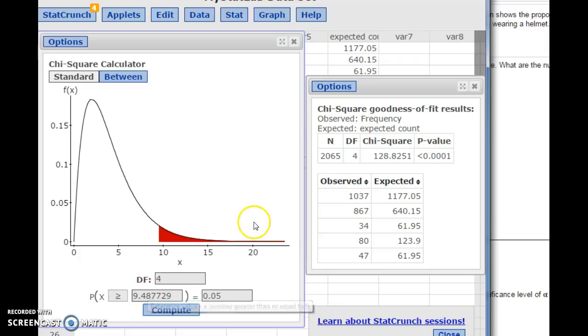If we were using the classical approach, you compare your test statistic. If it's bigger than this critical value, it means it's farther out in the tail and we're going to reject the null hypothesis. If this was smaller than our critical value, it means we're over here in the heart of the distribution and we're not going to reject the null hypothesis.